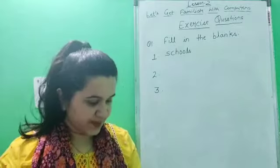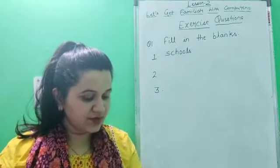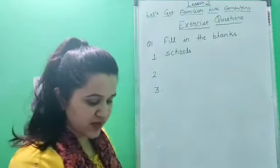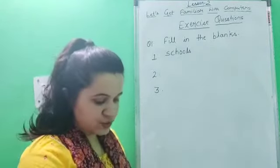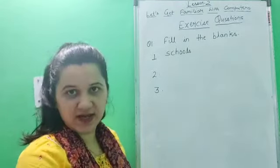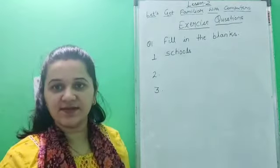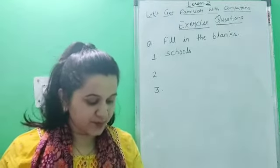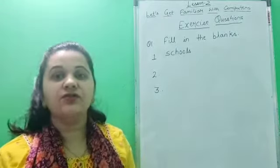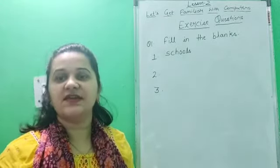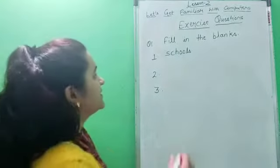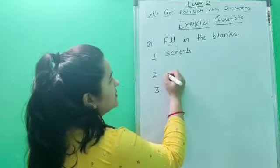Now come to the second one. Schools we have already filled, so two options are left: calculations and data. The second blank is — computer can do dash. Yes, computer can do calculations, meaning addition, subtraction. So write down calculations.